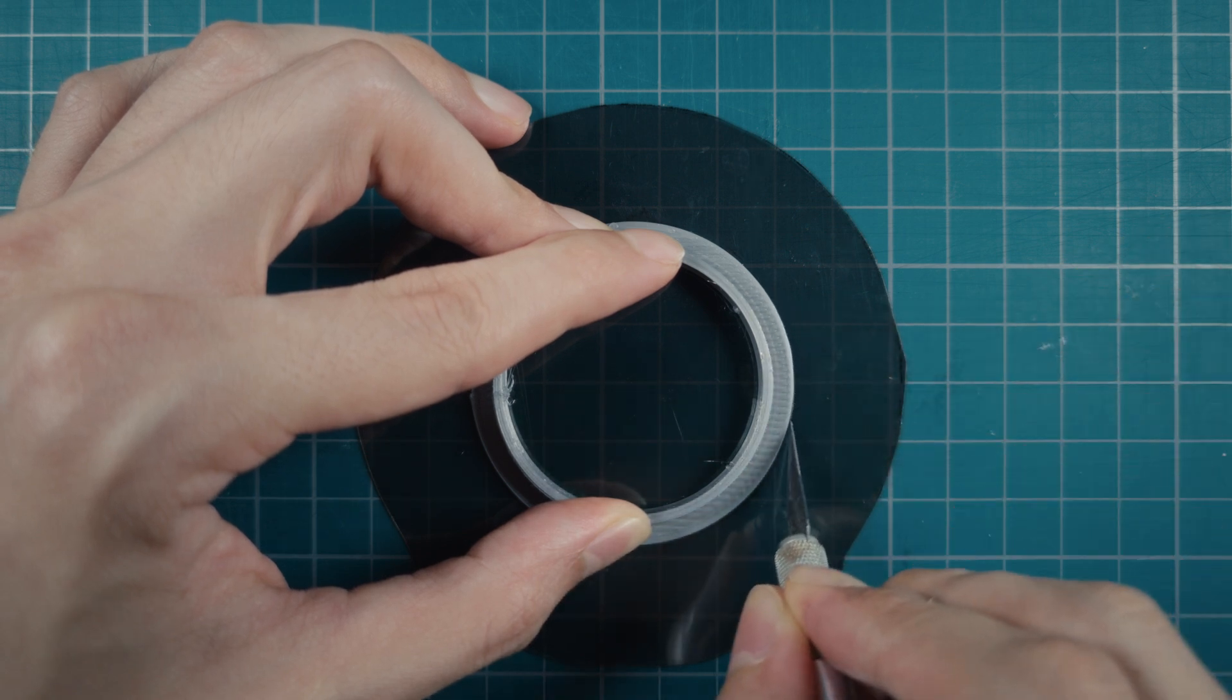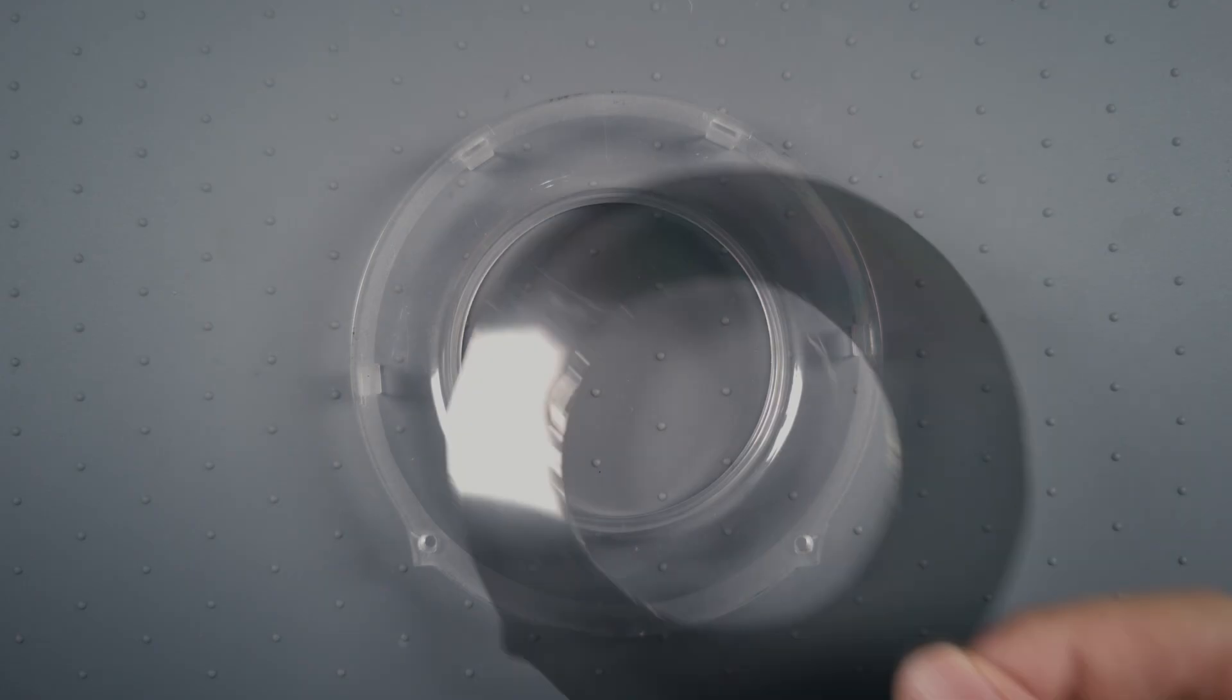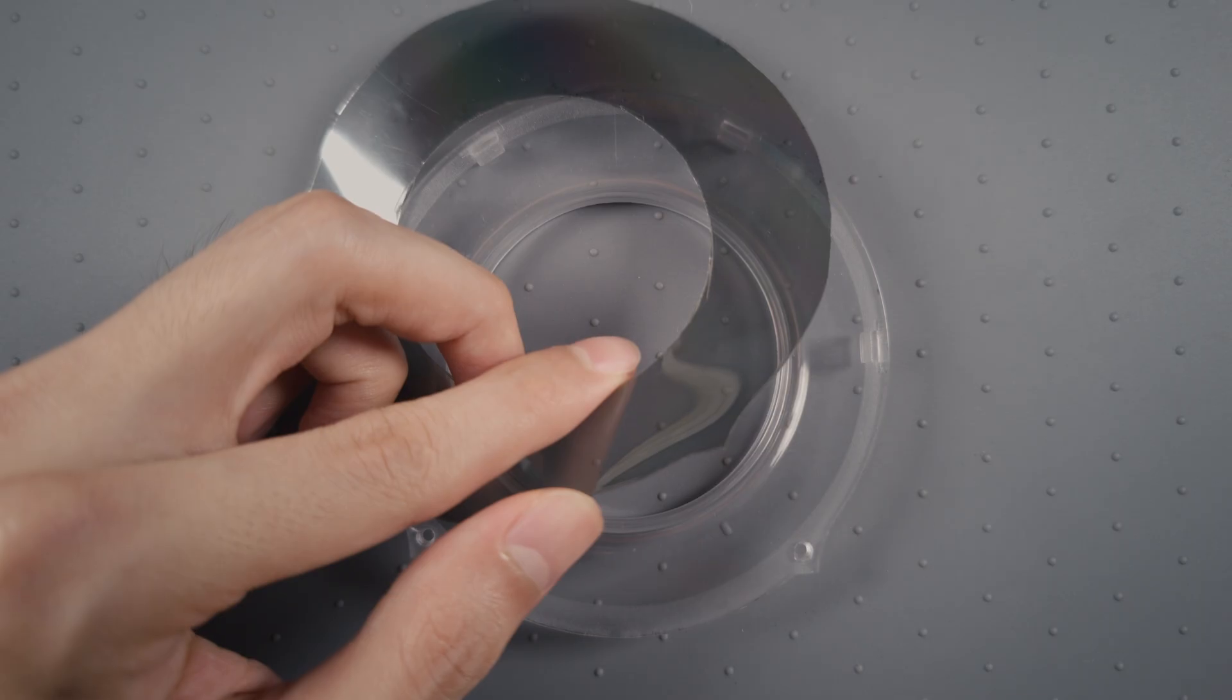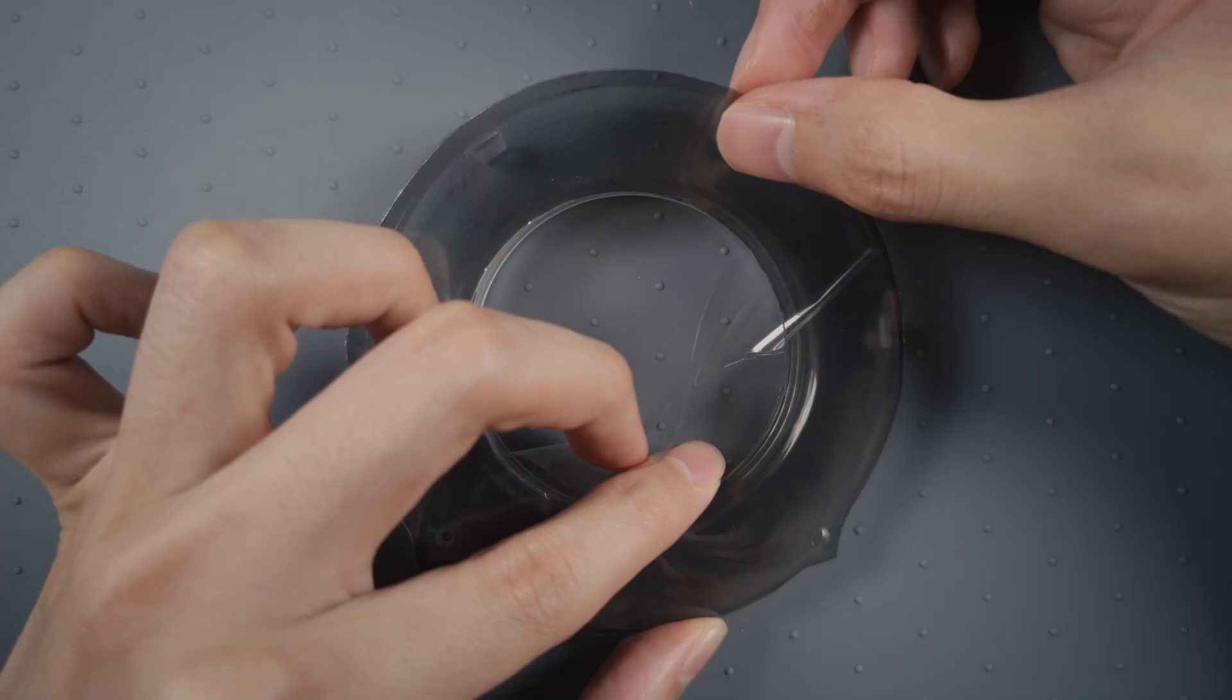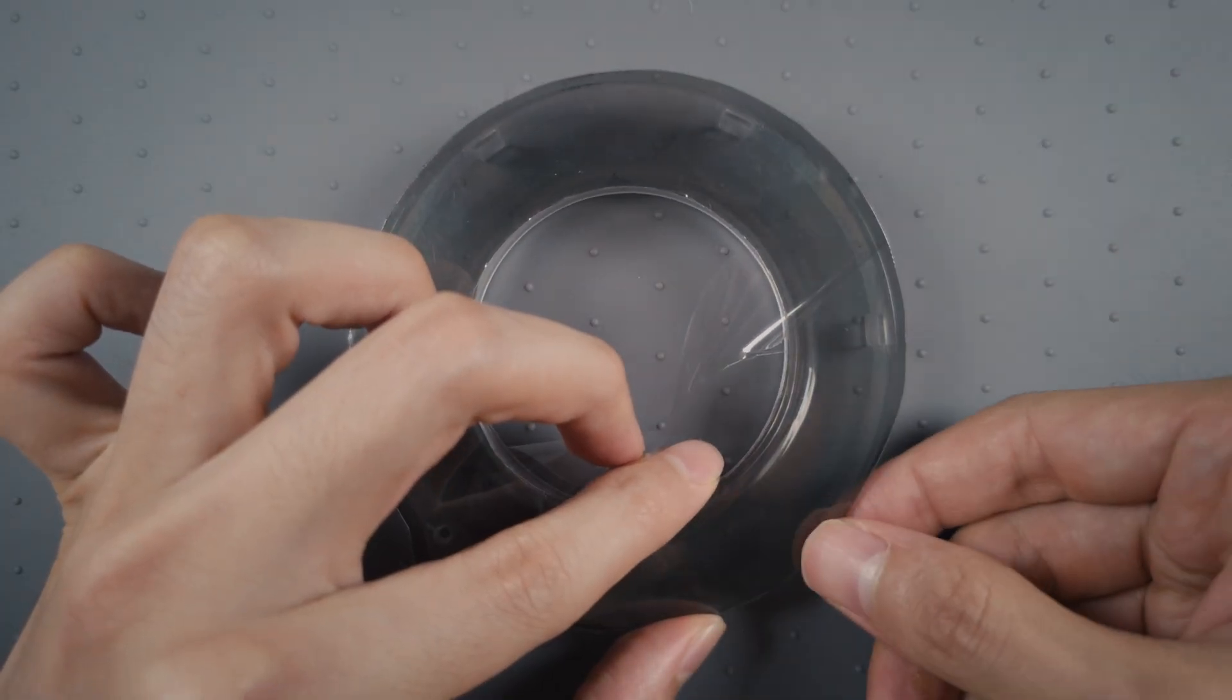Using the circular polarizer as a template, cut a hole in the circle, leaving us with a donut. Remove the backing film, exposing the adhesive side, and stick it onto the outside of the cover.